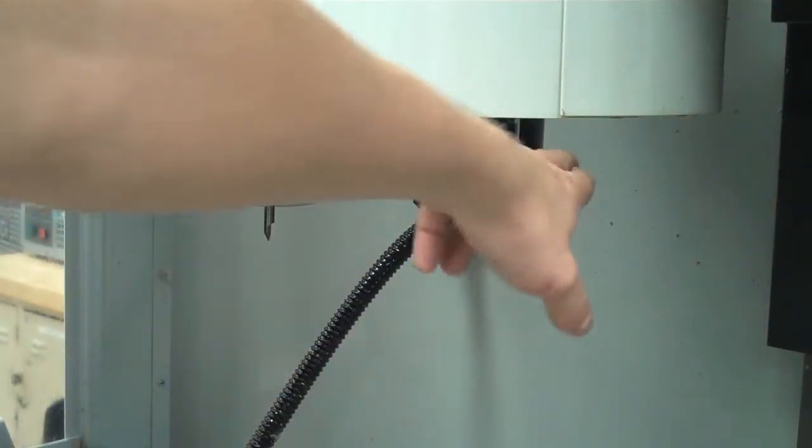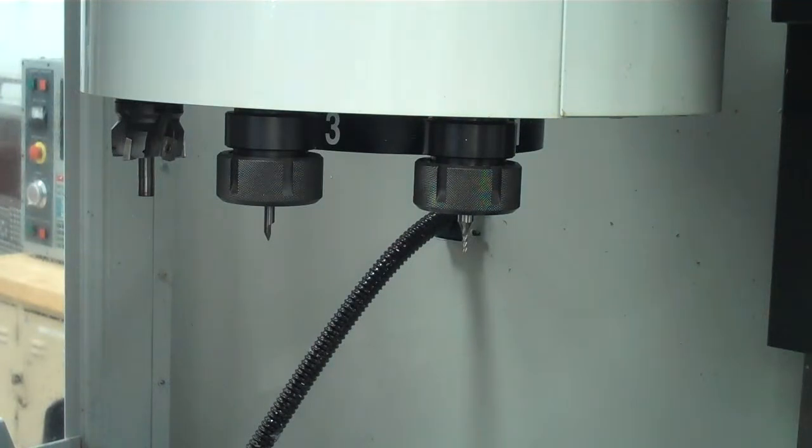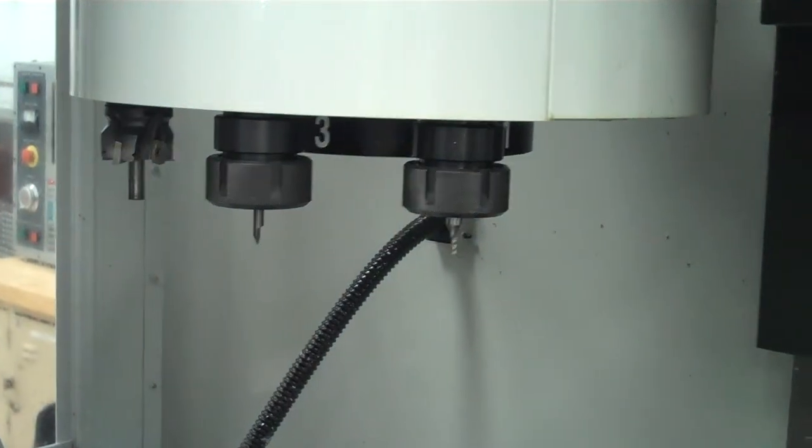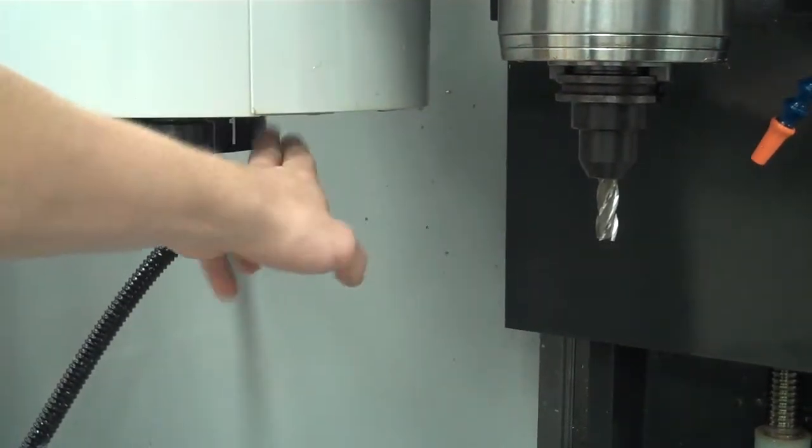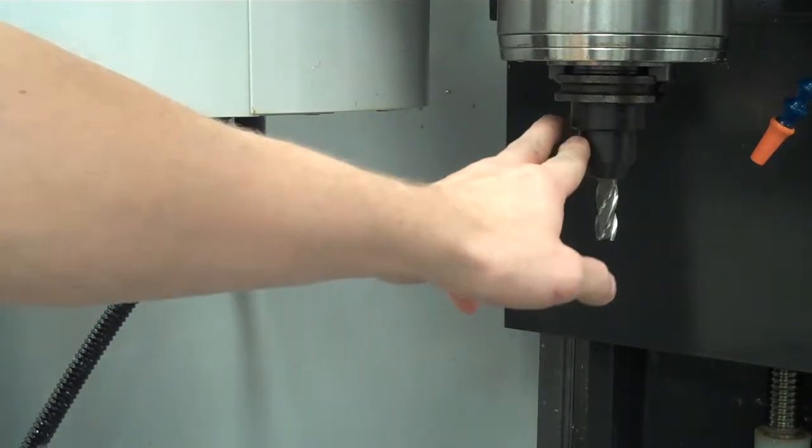Basically, if you ever want to know what tool is active, it's whichever tool is directly across from the spindle right now. So tool number 1 is empty, but it's directly across from the spindle. That means tool number 1 is in the spindle.